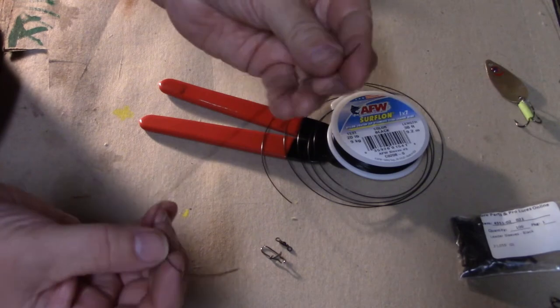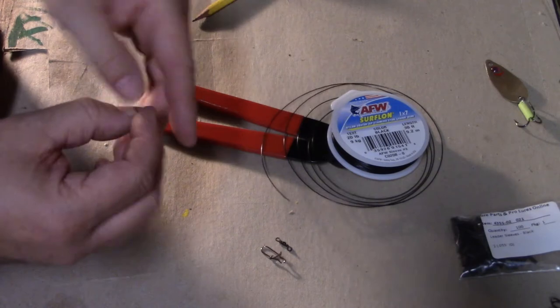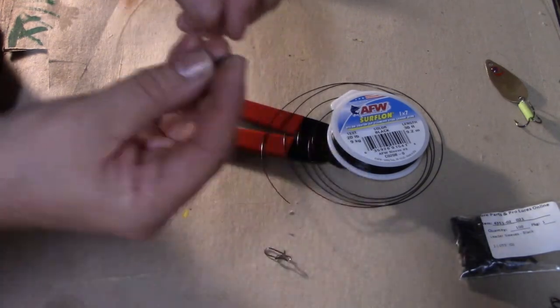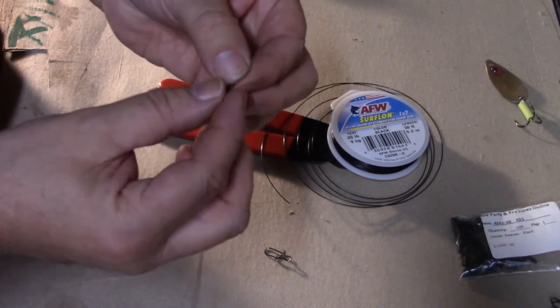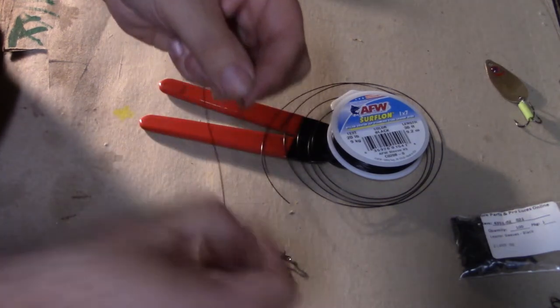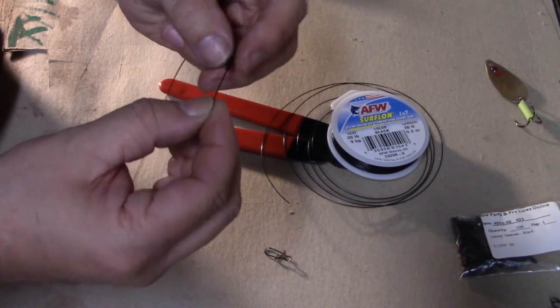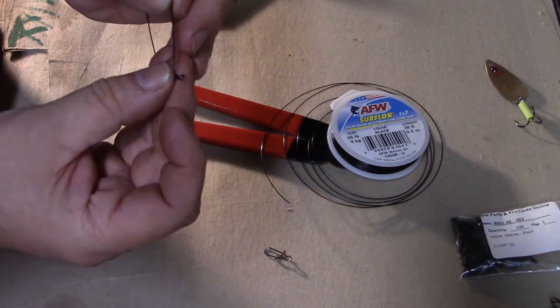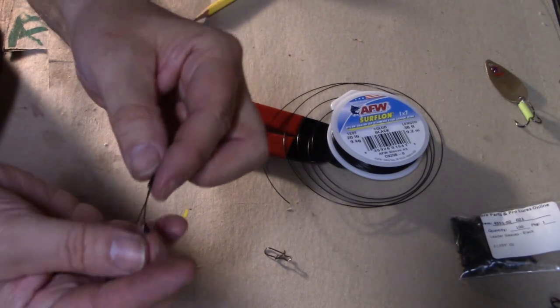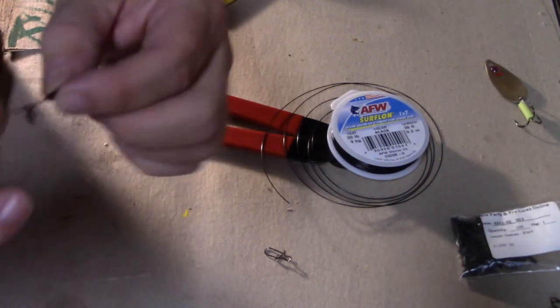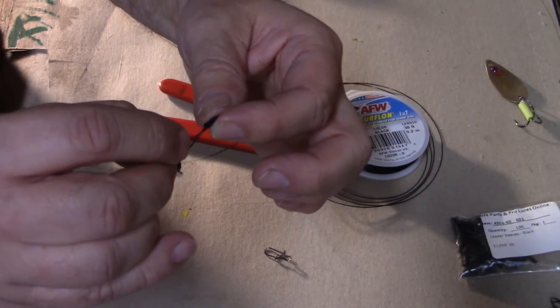All you got to do with this is put the sleeve on first, and put your barrel swivel on. Now you're going to turn this around and stick it back through that sleeve.